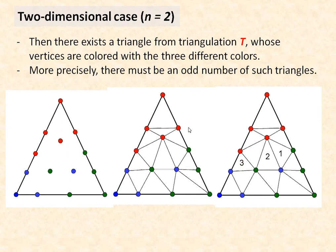I've made this one here. The lemma states that if I have a properly triangulated triangle like this one, then there exists a triangle from the triangulation whose vertices are colored with three different colors. Well, not only just one—more precisely, there must be an odd number of triangles.